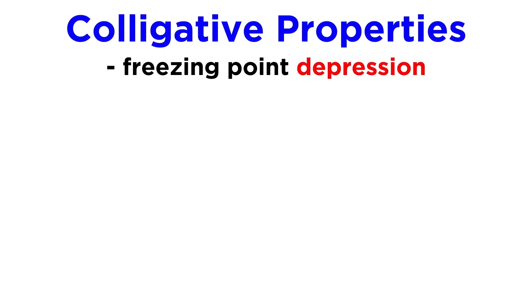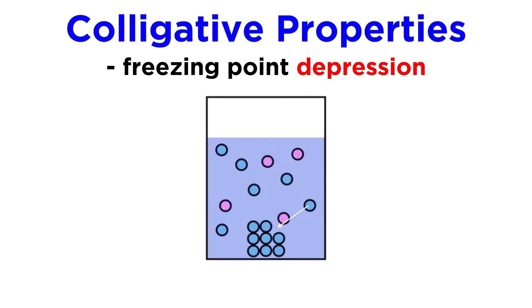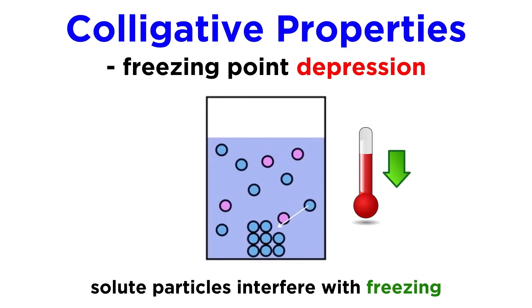This same concept can be extended to the freezing point of a liquid. In order for a liquid to freeze, the particles must form a lattice, so if solute particles are present and interfering with the formation of this lattice, the solution must reach an even lower temperature in order to freeze. This phenomenon is called freezing point depression.